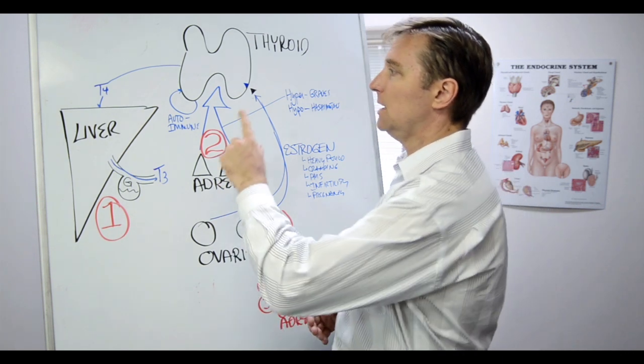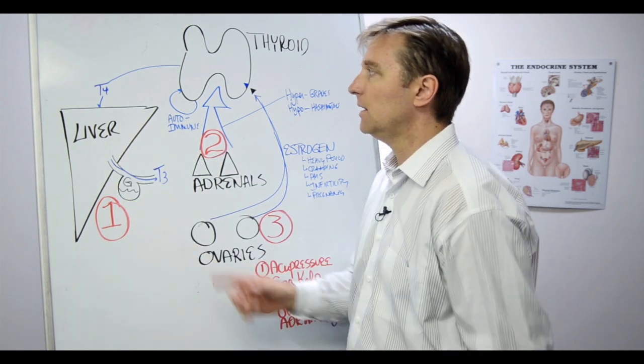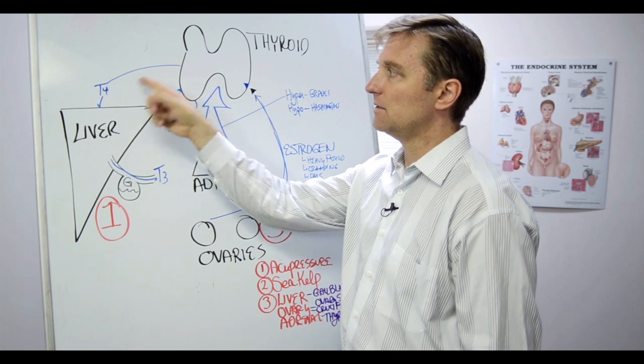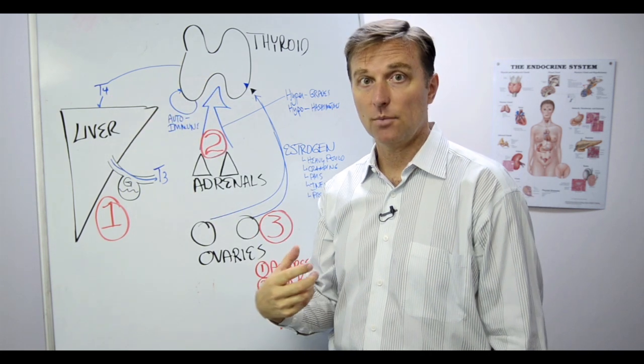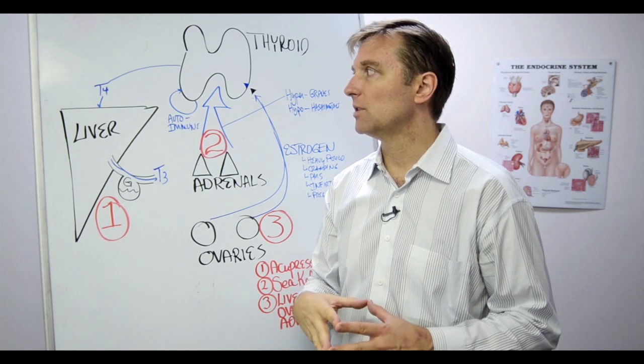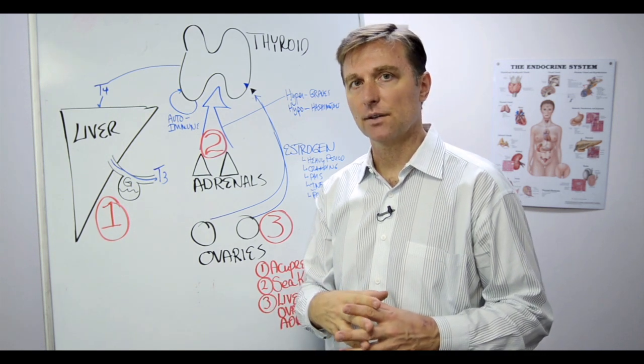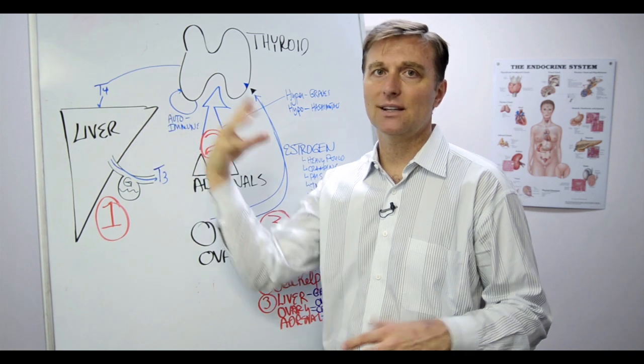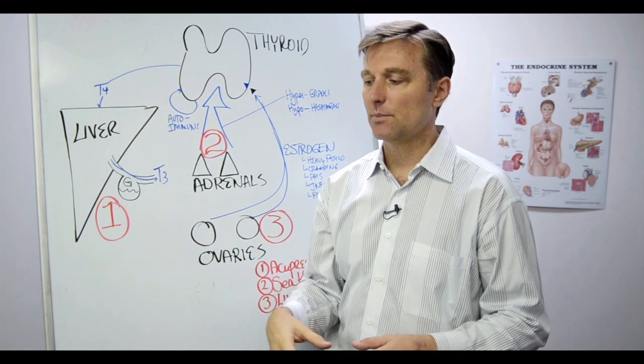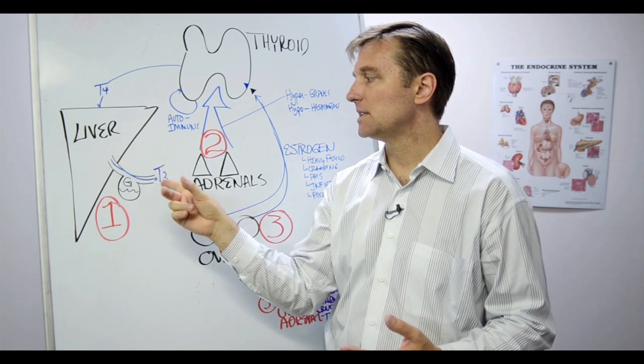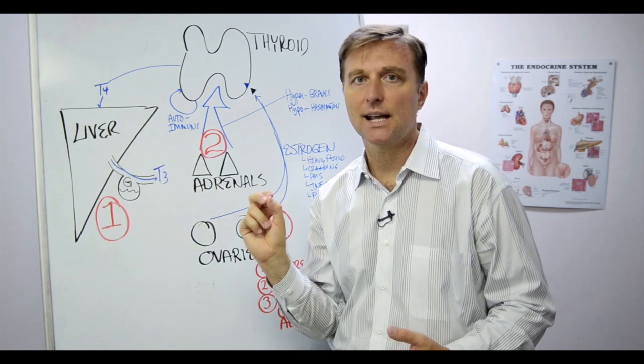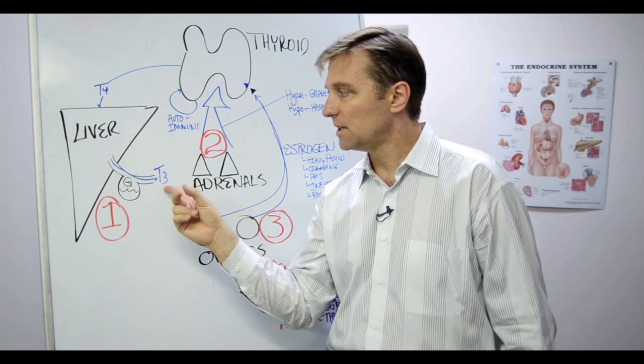Number one, the liver and gallbladder. 80% of the thyroid is converted from T4 to T3 through the liver and the gallbladder. So T4, T3 represents a number of iodine molecules. T4 is inactive thyroid, so it really doesn't do anything if it's in the blood. That would be something like Synthroid, the medication. But then the liver converts, it takes iodine off, and it becomes a T3, and that's an active form, and that's where it does the work.